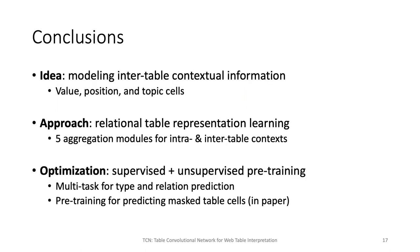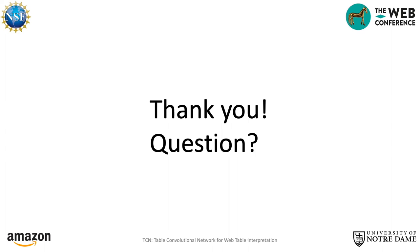To sum up, in this work we proposed the idea of modeling inter-table contextual information by considering three types of inter-table cells. We proposed an approach for relational table representation learning which includes five different modules for aggregating intra- and inter-table contexts. We also presented a supervised multi-task objective for training the model. You can find more details on our proposed unsupervised pre-training objective in our original paper. Thank you for listening to my presentation — please let me know if you have any questions.